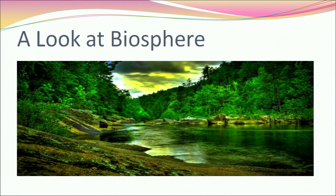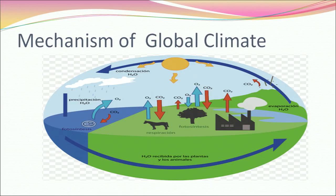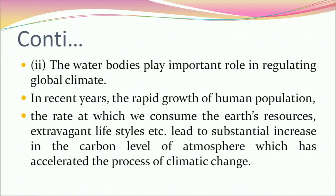Let's have a look at the biosphere and talk about global climate changes. The earth has a unique mechanism for stabilizing and controlling the global climate. Plants and animals balance the carbon dioxide level of the atmosphere, which in turn acts as a global climate thermostat — meaning these elements control the temperature balance within optimum limits.